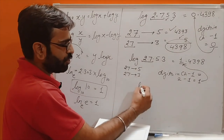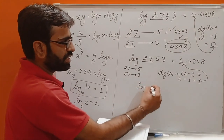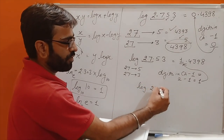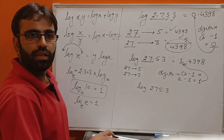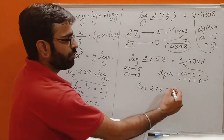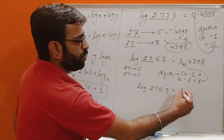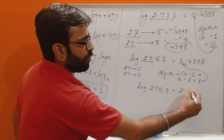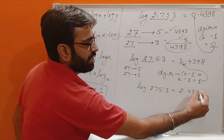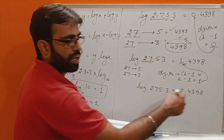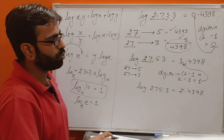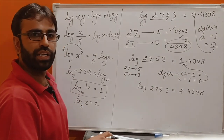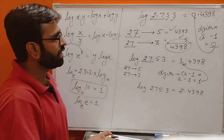So what will be the value of log 275.3? The mantissa is still 4398. The characteristic 275 has 3 digits, so 3 − 1 = 2. The value is 2.4398.